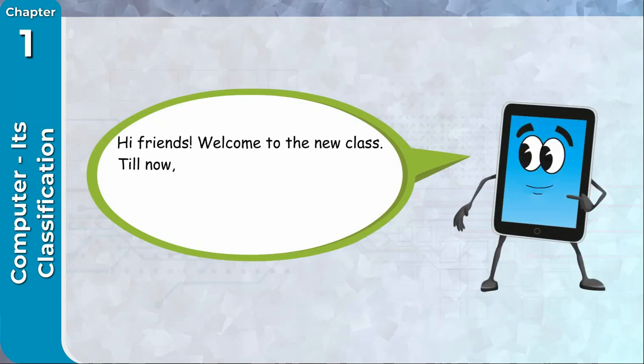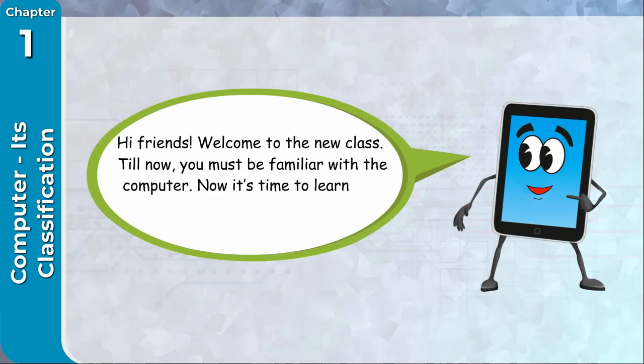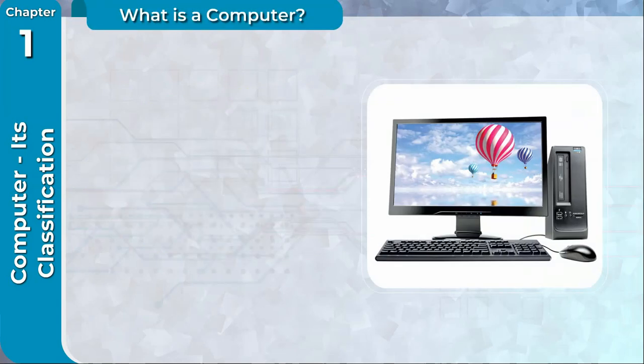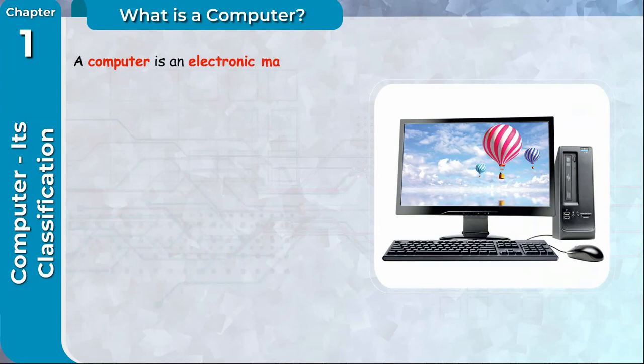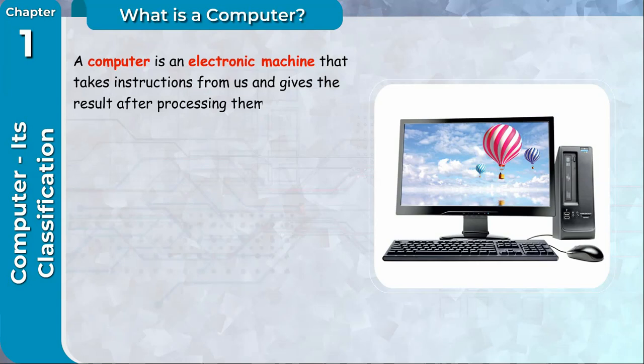Till now, you must be familiar with a computer. Now it's time to learn the different types of computers available today. What is a computer? A computer is an electronic machine that takes instructions from us and gives the result after processing them.